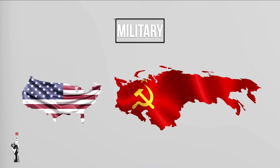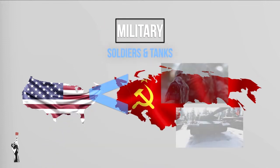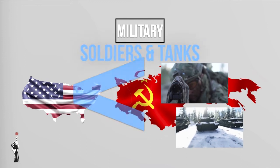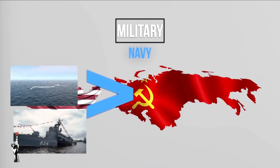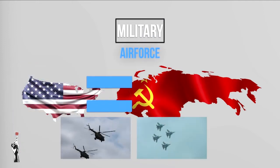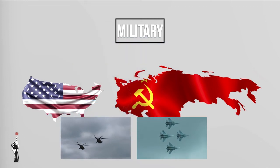Now let's move over to their militaries. The military is very important in the context of the Cold War. Do remember that this spans over 40 years, so military power fluctuated between the two nations. In terms of soldiers and tanks, Russia had a huge numerical advantage. The USA dominated the oceans with their large fleet. In terms of the air force, both parties were more or less on the same level, but more on this in lesson seven.